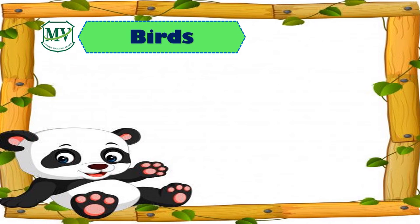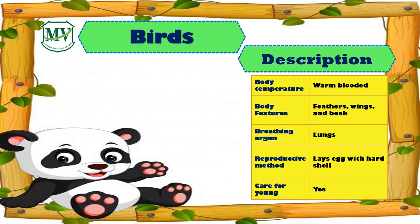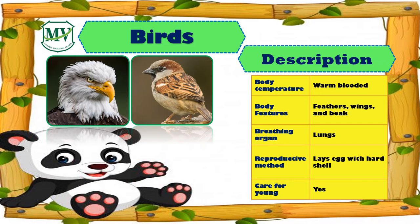Next are the birds. Birds are also warm-blooded animals, like eagle and sparrow. They have feathers, wings, and a beak. They also breathe using their lungs. And they lay eggs with hard shells.